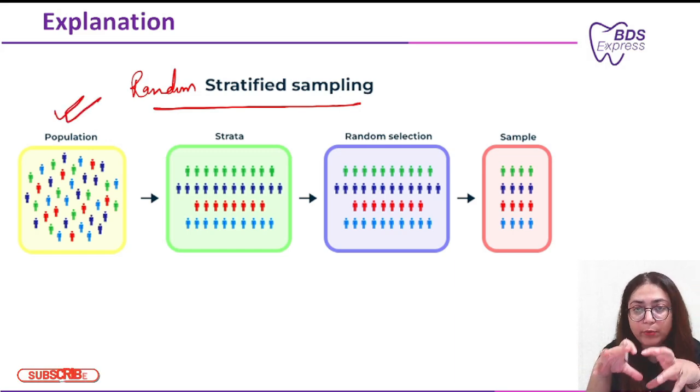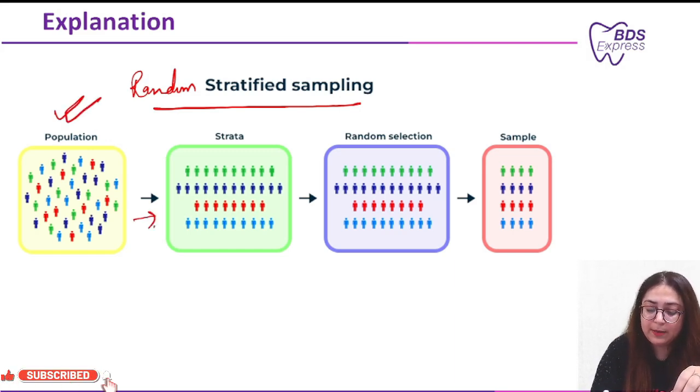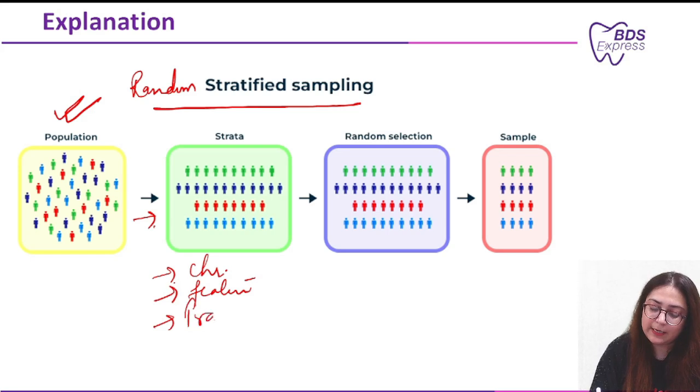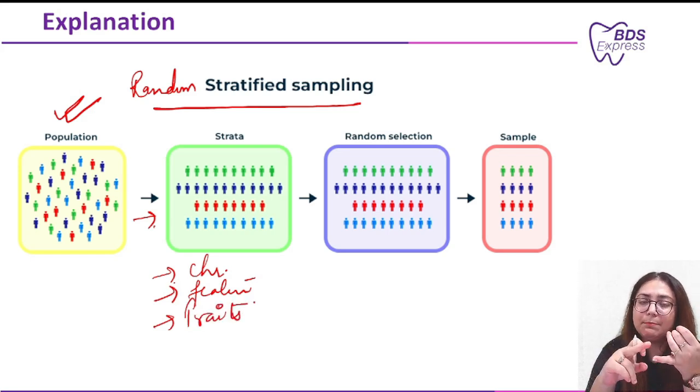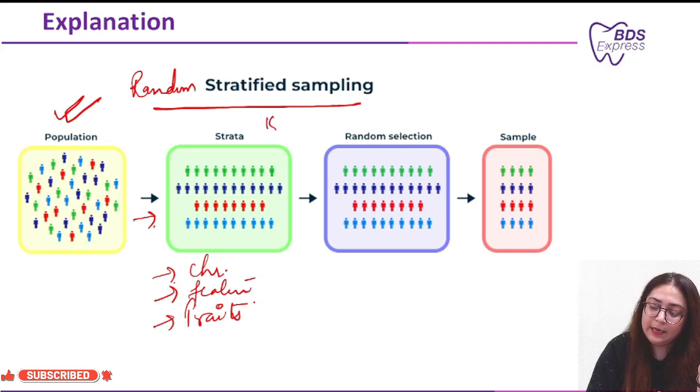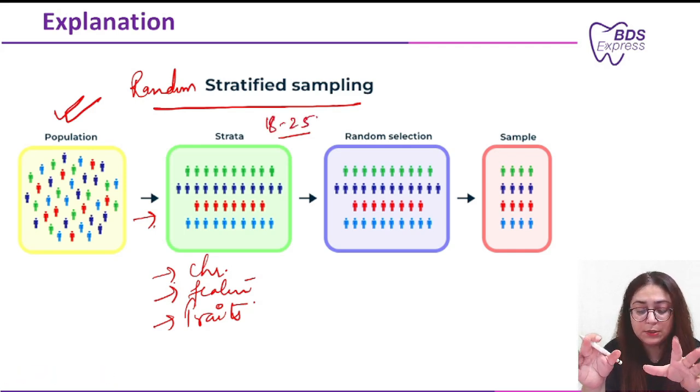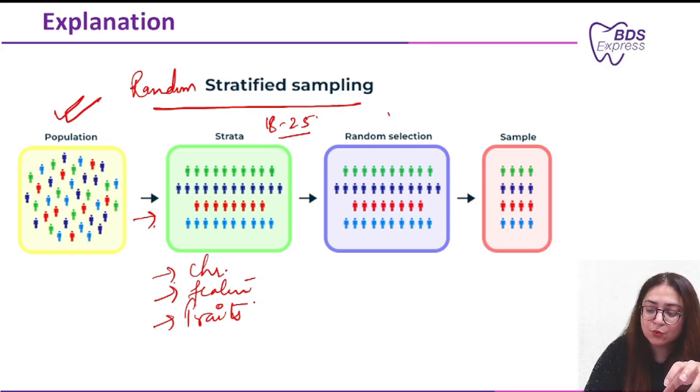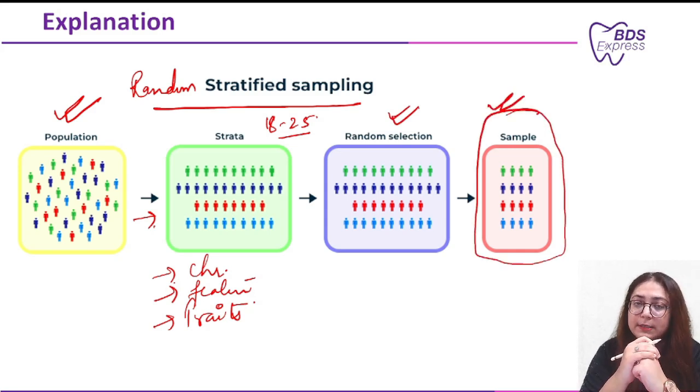So you are selecting a population. In that population, you will have some characteristics or features or traits you put accordingly. For example, you want to study male or female predominance, or you want to study a specific group of population, like 18 to 25 years of age, depending on what you want to study. So that is the strata. Now from that strata, you are choosing randomly and thereby making your sample. This is how it is selected.